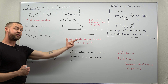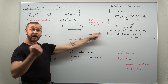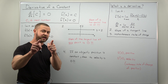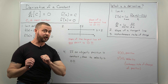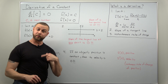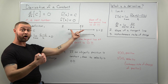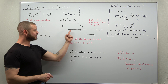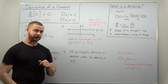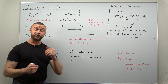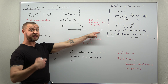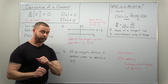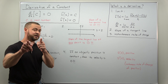A second way to understand this: consider the graph of a constant function, say the constant 2. The graph of y equals 2 is a horizontal line. What is the slope of a horizontal line? It's 0. So if we were to draw any tangent line at any point on this graph, the tangent line is going to be horizontal, and the slope of any tangent line will also be 0. That's another way to understand that the derivative of a constant is 0 — the slopes of the tangent lines will all be 0.